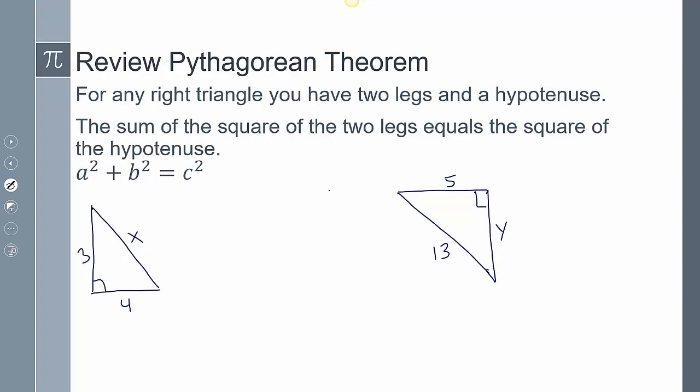Before we do that, let's do a quick review of the Pythagorean theorem. For any right triangle, you have two legs and a hypotenuse. The sum of the square of the two legs equals the square of the hypotenuse. We get this formula: a squared plus b squared equals c squared, where these are the legs and this is the hypotenuse.